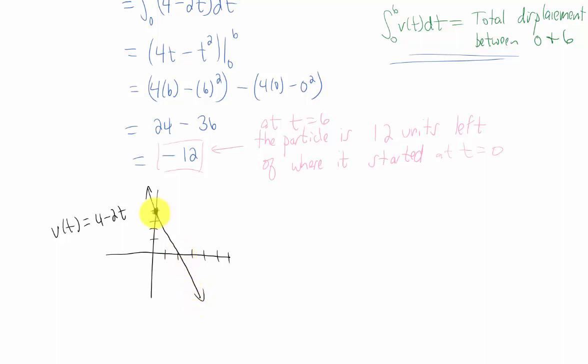So what happened to this particular particle is that at time equals 0, it started moving to the right. And then the velocity slowed down, and it moved more slowly and more slowly until it stopped after 2 seconds. Then the particle is moving left from 2 seconds until 6 seconds. And eventually, as we calculated here, the particle ends up 12 units to the left of where it had started.